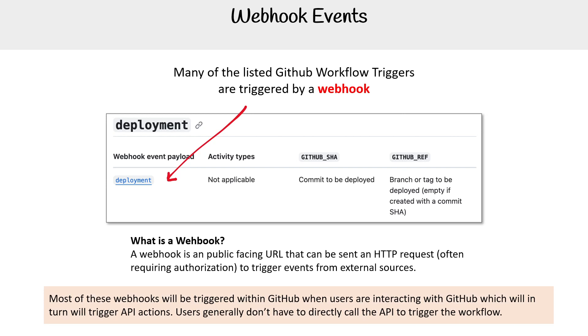Most of these webhooks will be triggered within GitHub when users are interacting with GitHub, which will in turn trigger API actions. Users generally don't have to directly call APIs or REST APIs to trigger the workflows — you can, but typically you're just going about your business and these are getting triggered.